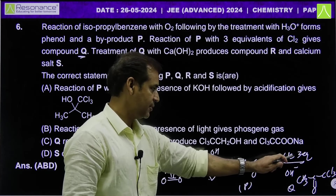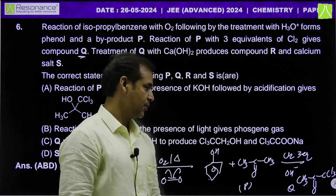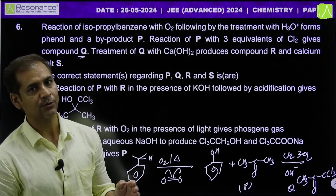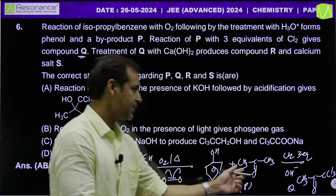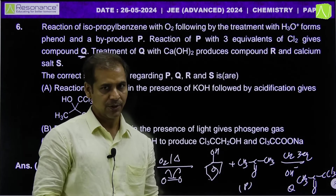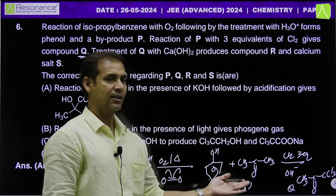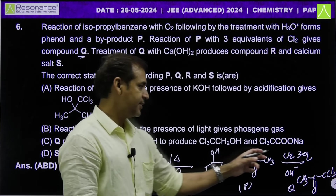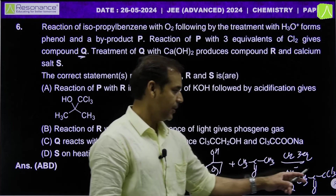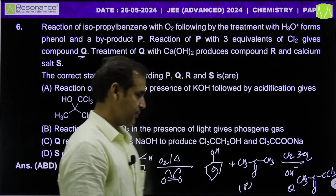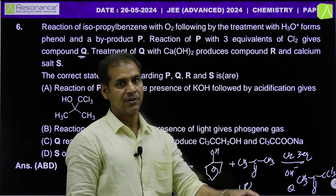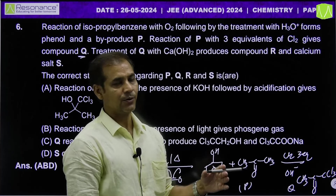P is acetone. Reaction of P with 3 equivalents of Cl2: acetone reacts with chlorine in alkaline medium (OH- present). The reaction proceeds through tautomerism — base-catalyzed tautomerism forms an enolate. The activated alkene does electrophilic substitution with chlorine. One by one, all three alpha hydrogens are replaced by three chlorines, forming Q product — alpha,alpha,alpha-trichloroacetone (1,1,1-trichloroacetone).